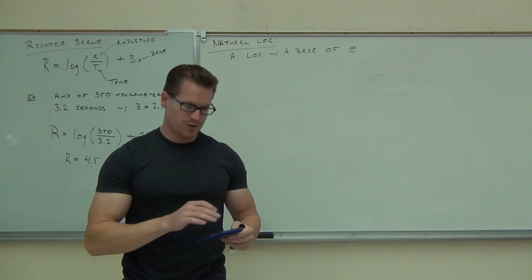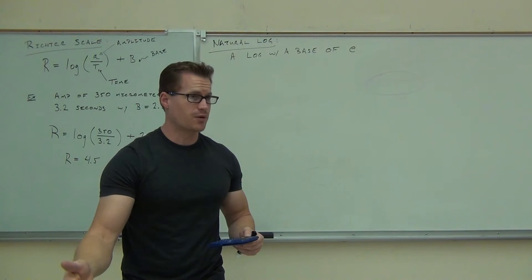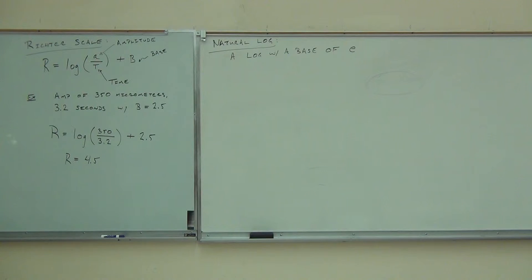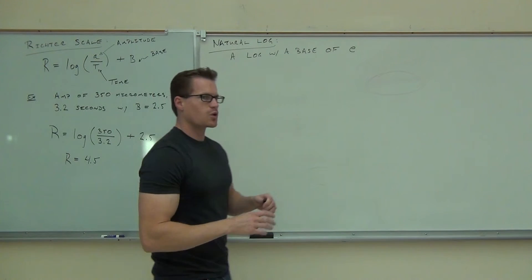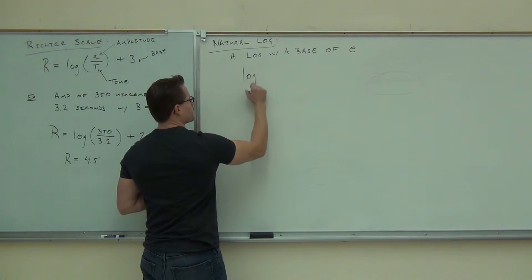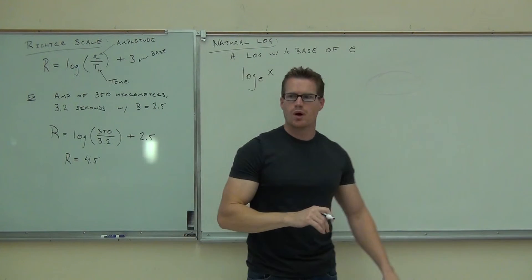That's the Euler number up to about 10 decimal places. It keeps going forever, never, never, never. So it's about 2.72. That's what the Euler number is going to be for you, about 2.72. So we're talking about a logarithm with a base of about 2.72 or E.